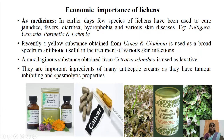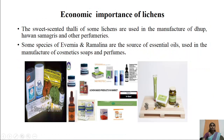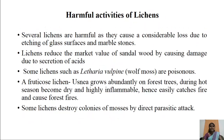Some ointments used as antiseptics and anti-tumor drugs are extracted from lichens. Some lichens, due to their sweet-scented thalli, are used in the manufacture of dhoop, havansmagri, and other perfumeries. Some species of Evernia and Ramalina are sources of essential oils used in the manufacture of cosmetic soaps and perfumeries. These are the beneficial aspects of lichens.